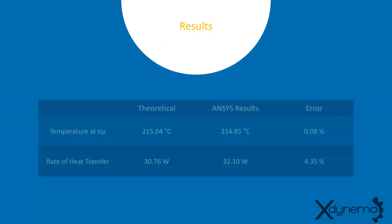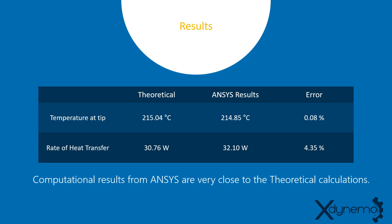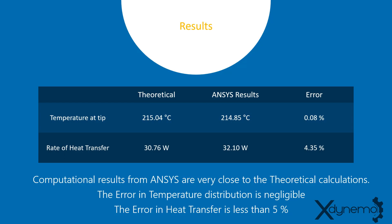Here is the summary of the results. The temperature at the tip is 215.04 degrees Celsius from theoretical calculations, whereas the ANSYS result shows 214.85 degrees Celsius — an error of 0.08%. Theoretical calculations show the rate of heat transfer as 30.76 watts, whereas ANSYS gives 32.10 watts with an error of 4.35%. Computational results from ANSYS are very close to the theoretical calculations. The error in temperature distribution is negligible, and the error in heat transfer is less than 5%.